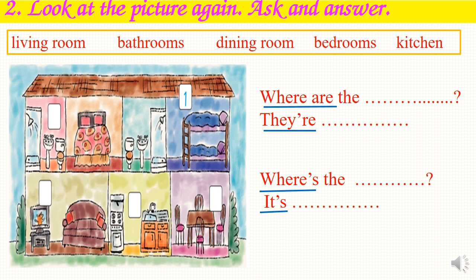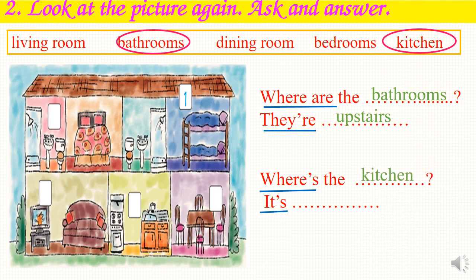Now let's look at bathrooms. How many bathrooms are there? There are two. So we have the question: Where are the bathrooms? They are upstairs. And how about the kitchen? How many kitchens are there? There is one. So we have the question: Where's the kitchen? It's downstairs. Okay, it's your turn — ask and answer.